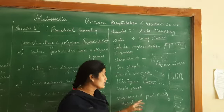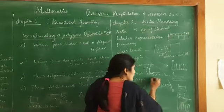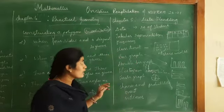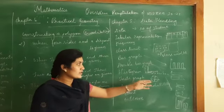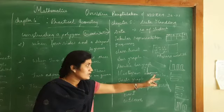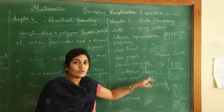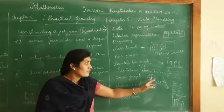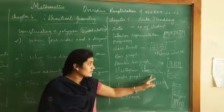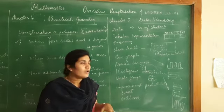Circle graph or pie chart: data is shown using a circle divided into sectors. A full circle is 360 degrees. We sub-divide the data into parts and calculate the central angle to convert the given parts into angles. So a fraction of data is converted into a corresponding angle in the pie chart.